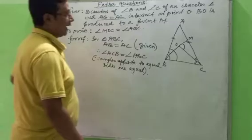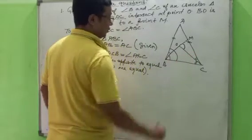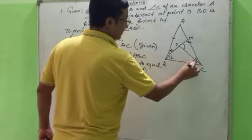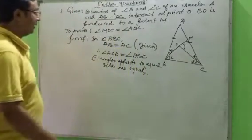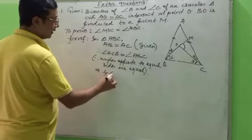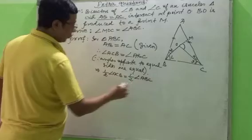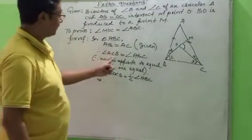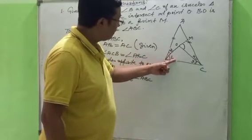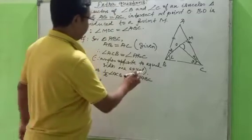Now the line segments OB and OC bisect angle B and angle C. Let us take angle 1, angle 2, angle 3, and angle 4 for the four half-angles. We will divide both angles by 2. So half of angle ACB equals half of angle ABC — we have taken half on both sides, because OB bisects angle B and OC bisects angle C.